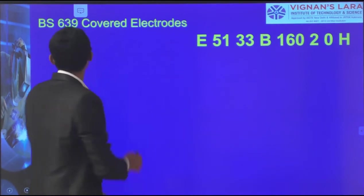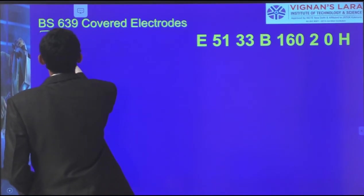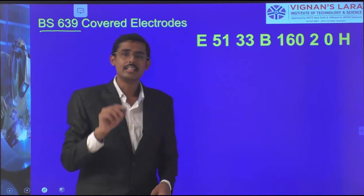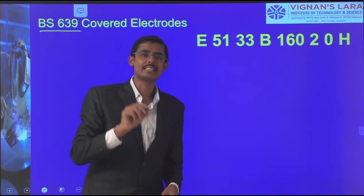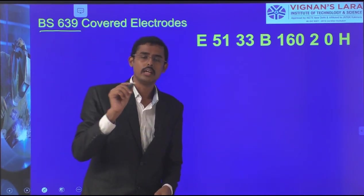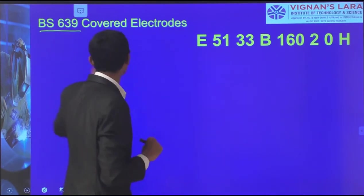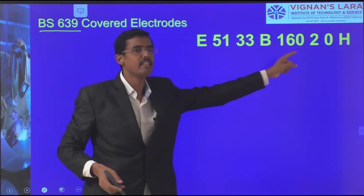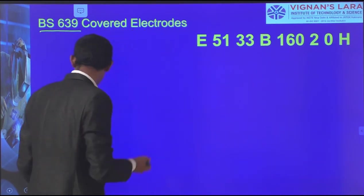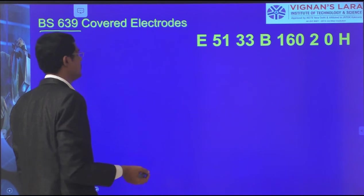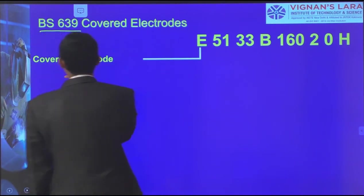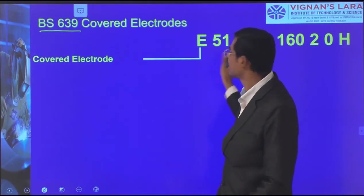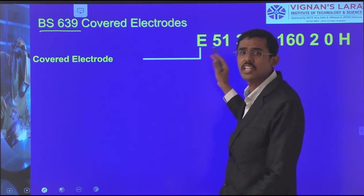One more with respect to British Standard 6039: up to now we have seen the American Standards (AWS). Here the British Standard 6039 also divides electrodes into categories. 'E' belongs to covered electrode — similar pattern — but some additional information has been added.